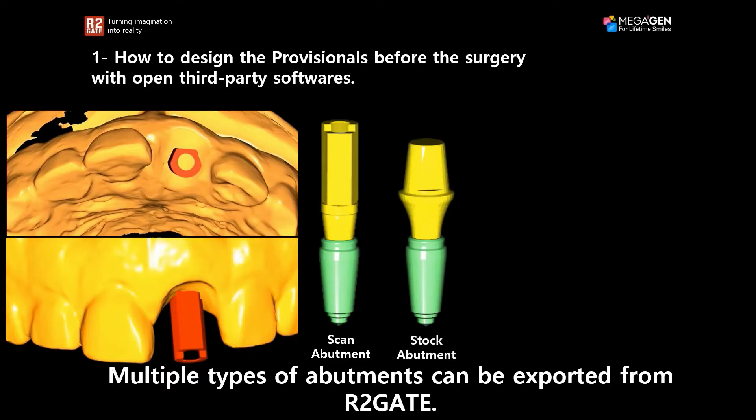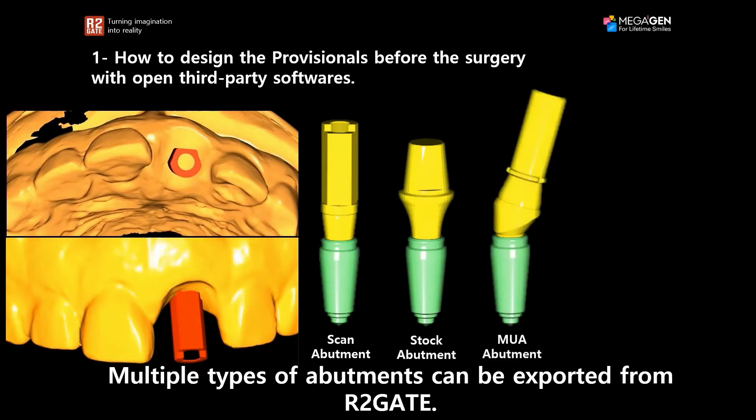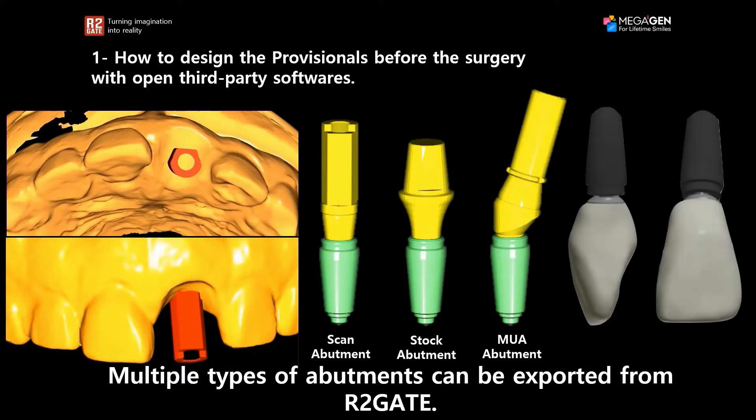You can also export a stock abutment from the R2GATE software, and you could also export a multi-unit abutment, and that allows you to design the prosthesis before the surgery.